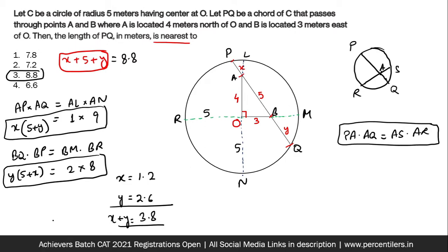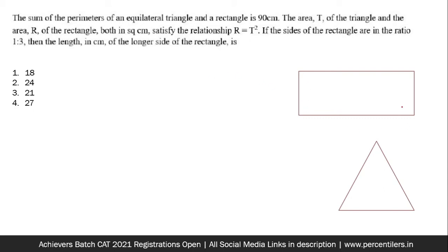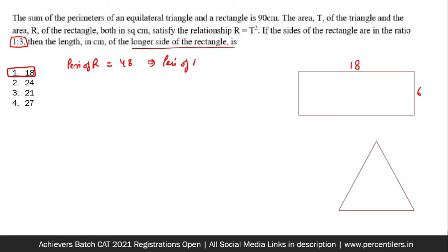Moving to the next question — a rectangle and an equilateral triangle. One approach is to use the answer options. We need the longer side of the rectangle. For option 1: longer side = 18, shorter side = 6 (ratio 3:1). Perimeter of rectangle = 48, so perimeter of triangle = 42, giving side = 14. Since 14 is a multiple of 7 but the rectangle area doesn't contain 7, option 1 is discarded.